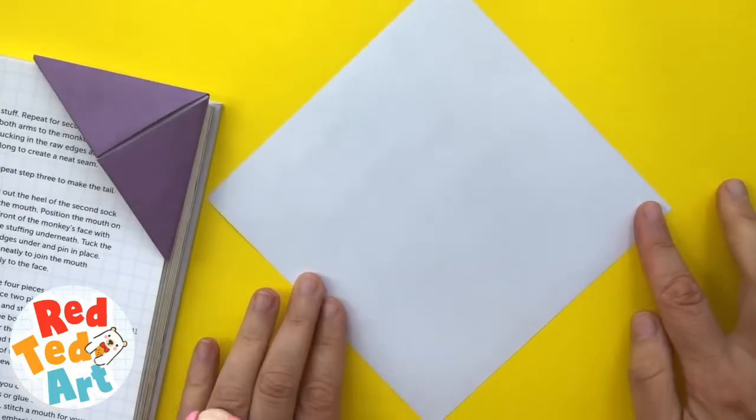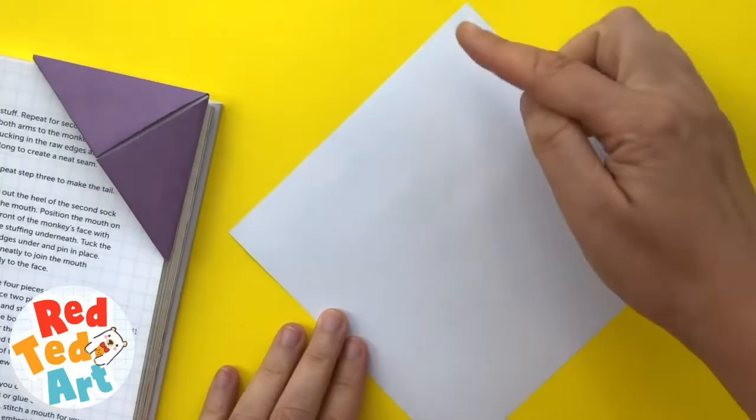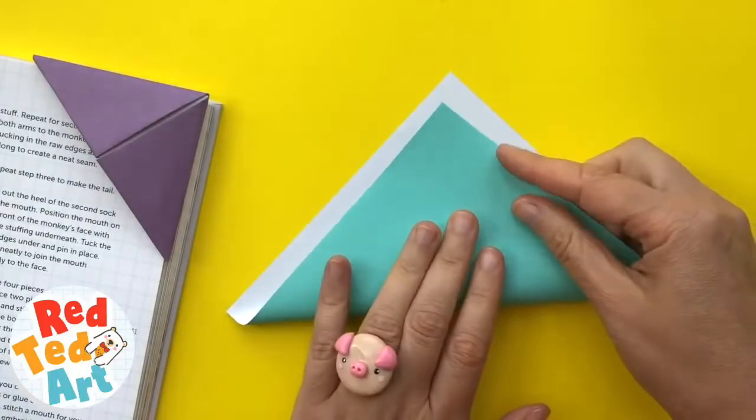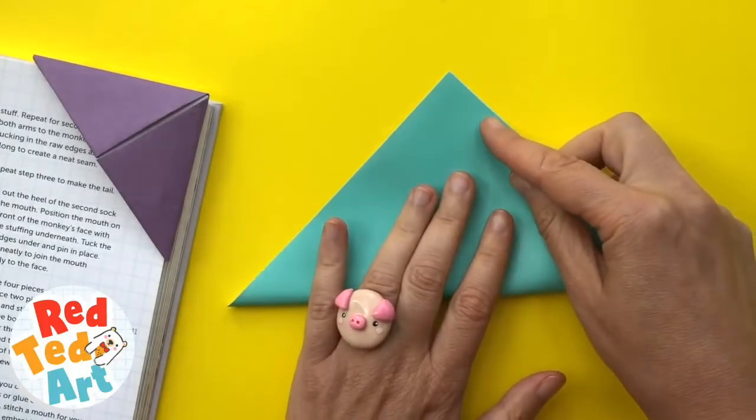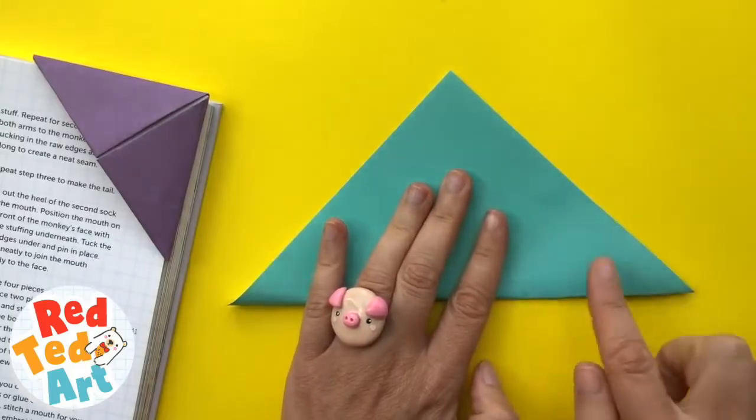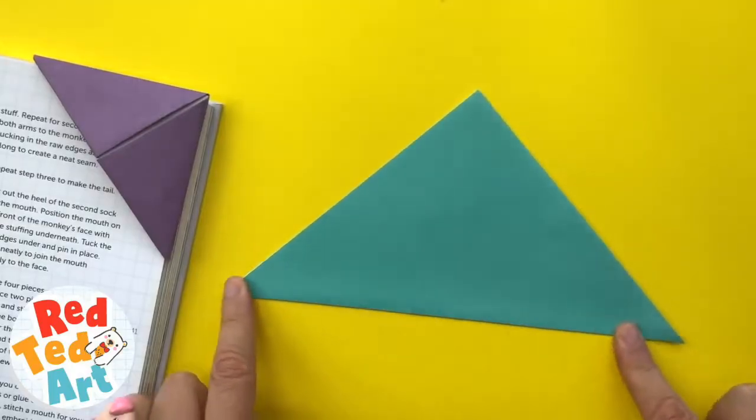You first twist it to make a diamond. Bring the bottom corner up to the top and make a neat fold at the bottom.